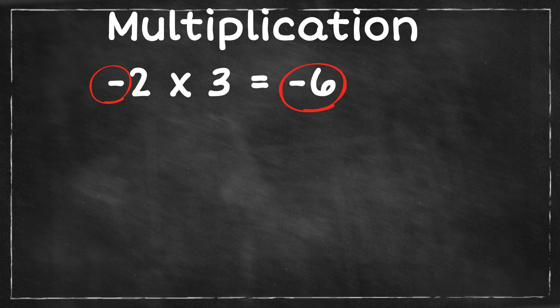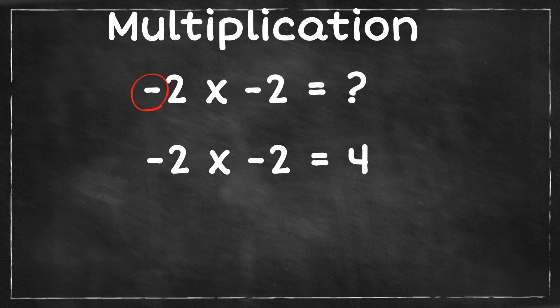How about negative 2 times negative 2? Well, the answer is 4, and since you have an even number of negative numbers, 2, the answer is positive.